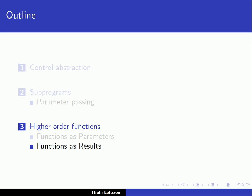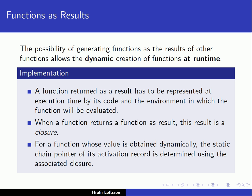So let's finally talk about functions as results. We have been talking about functions as parameters. If we are able to generate functions as the result of other functions, then we can dynamically create functions at runtime. Functions that are returned as a result have to be represented by code and the environment in which the function will be evaluated. That's very similar to what we talked about with functions as parameters. So at execution time, a function that is returned as a result has to be represented with a closure.